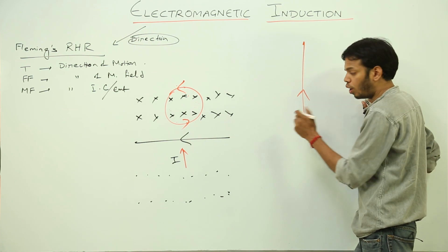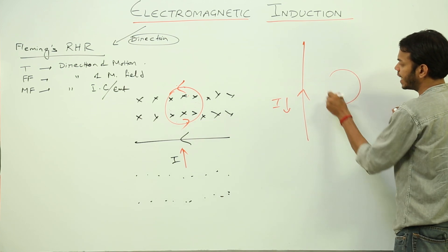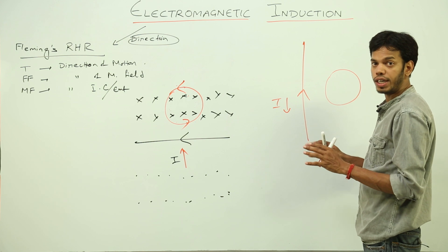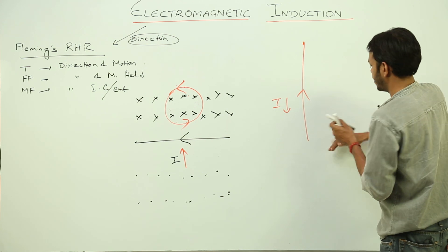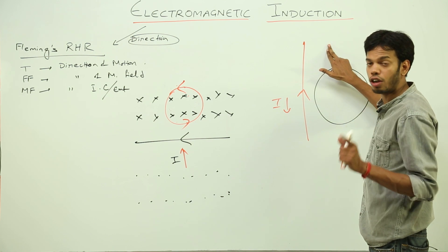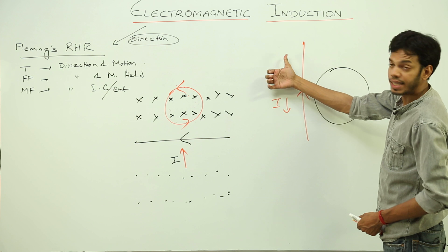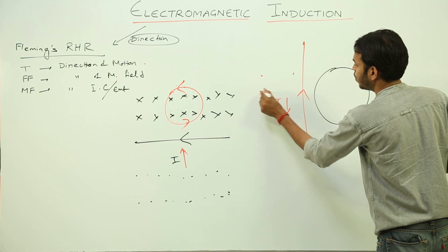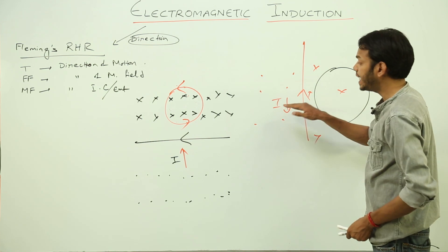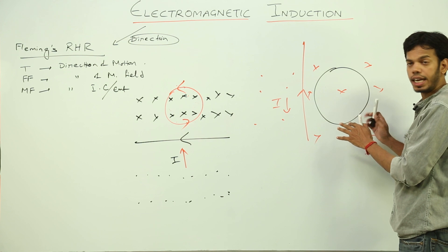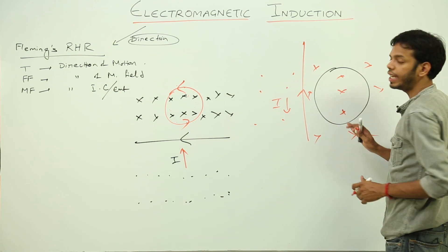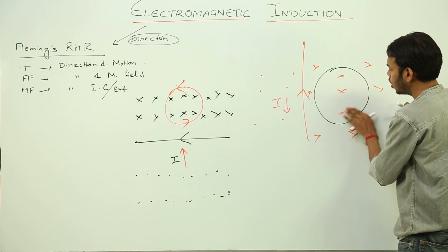Let's do one more example, but faster. This time the current is flowing in the same direction but its value is decreasing, and I am placing a loop on this side again. Initially, the current flowing in this direction gives magnetic field with dots on one side and crosses on the other. With the decrease in current, there will be fewer crosses in the loop area — for example, if there were three crosses, now only one is left.